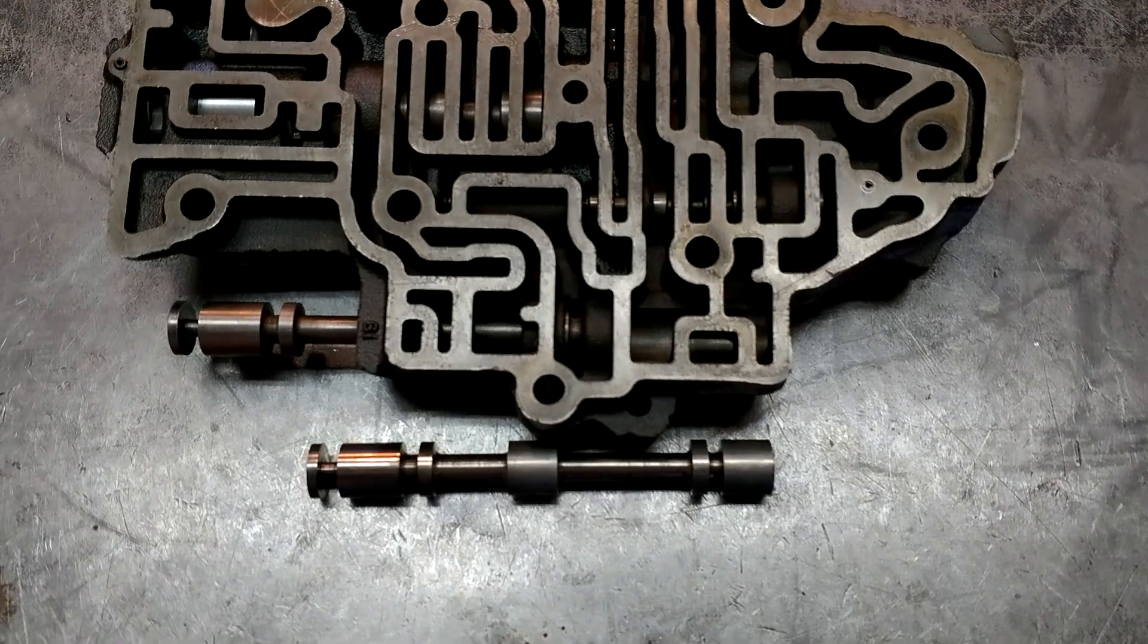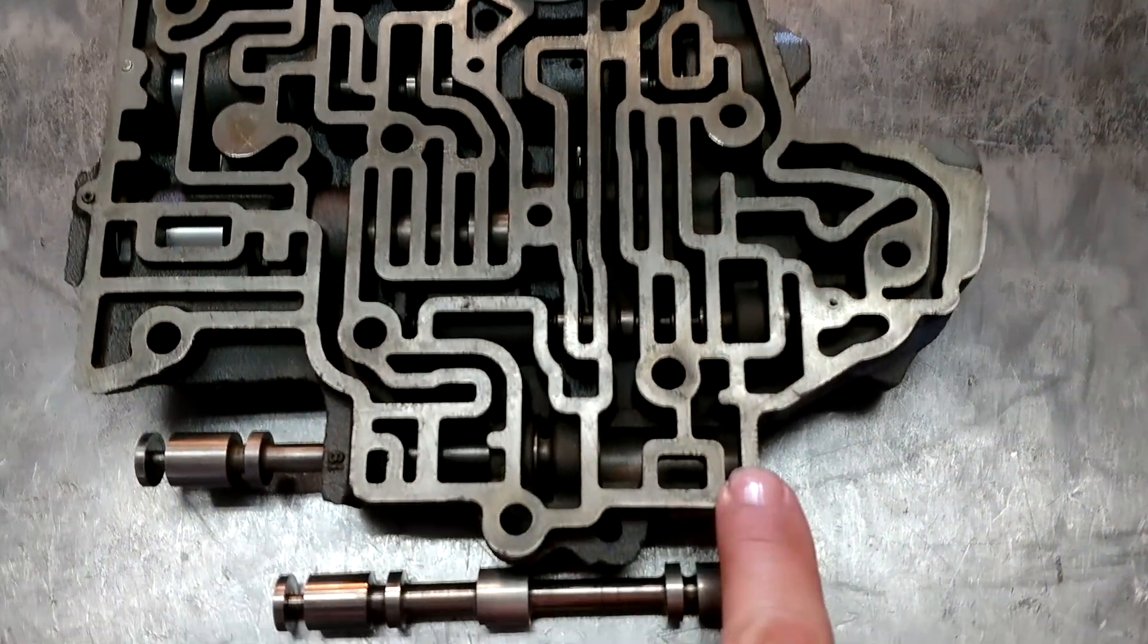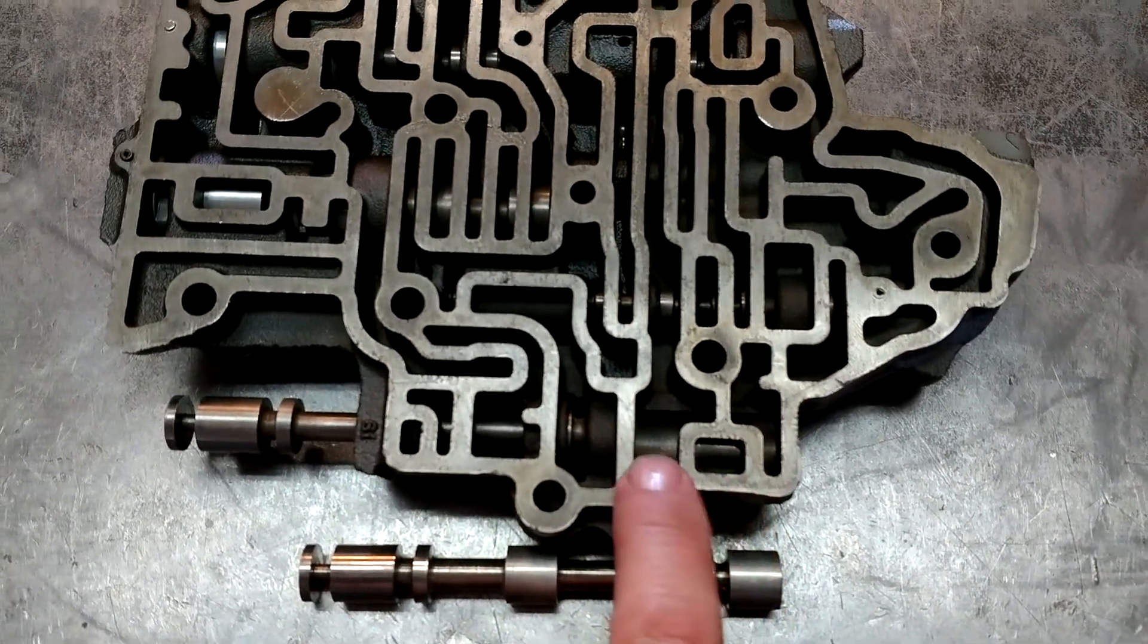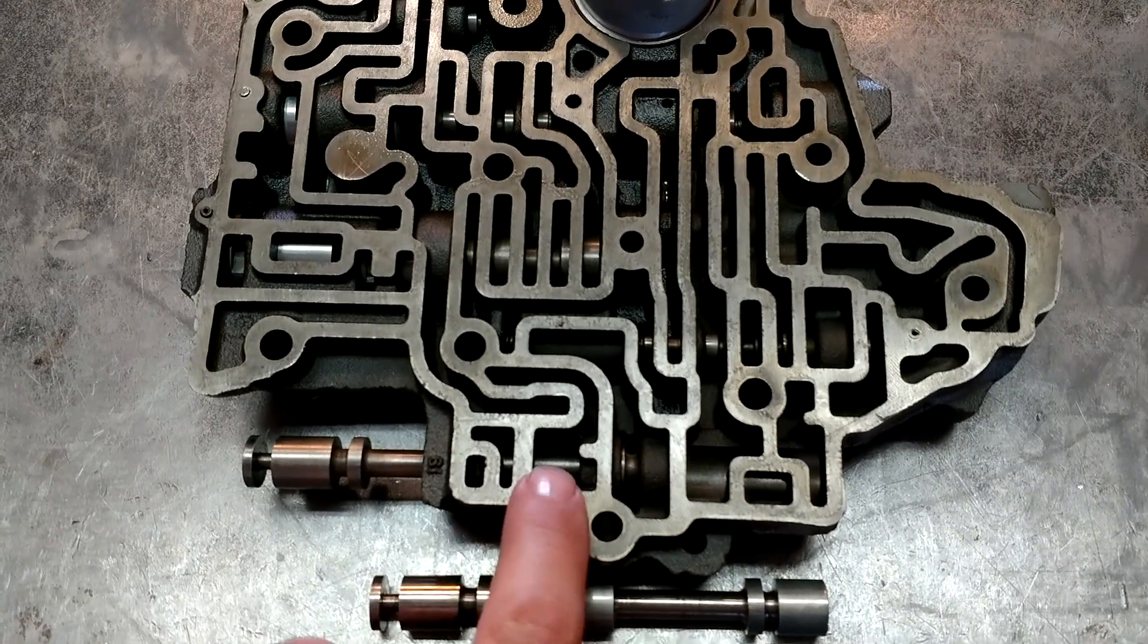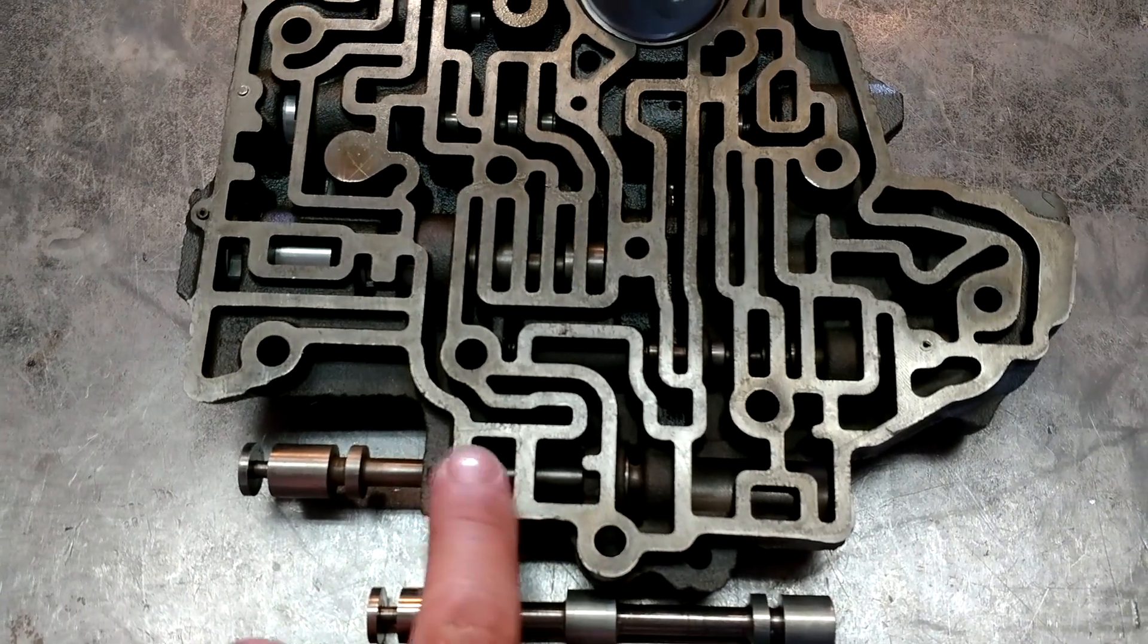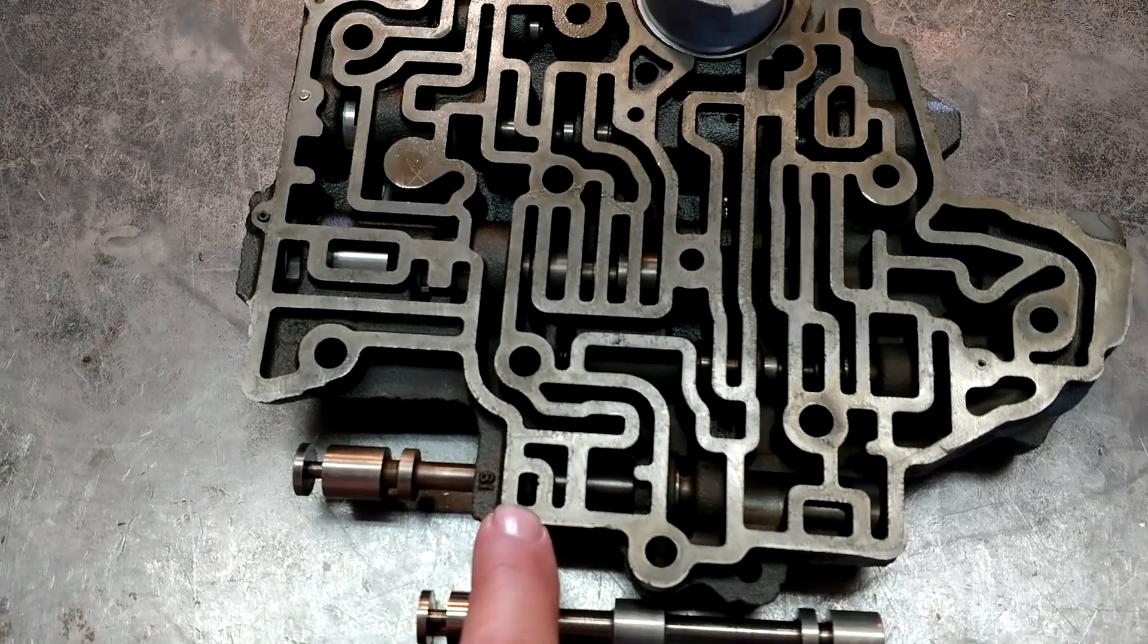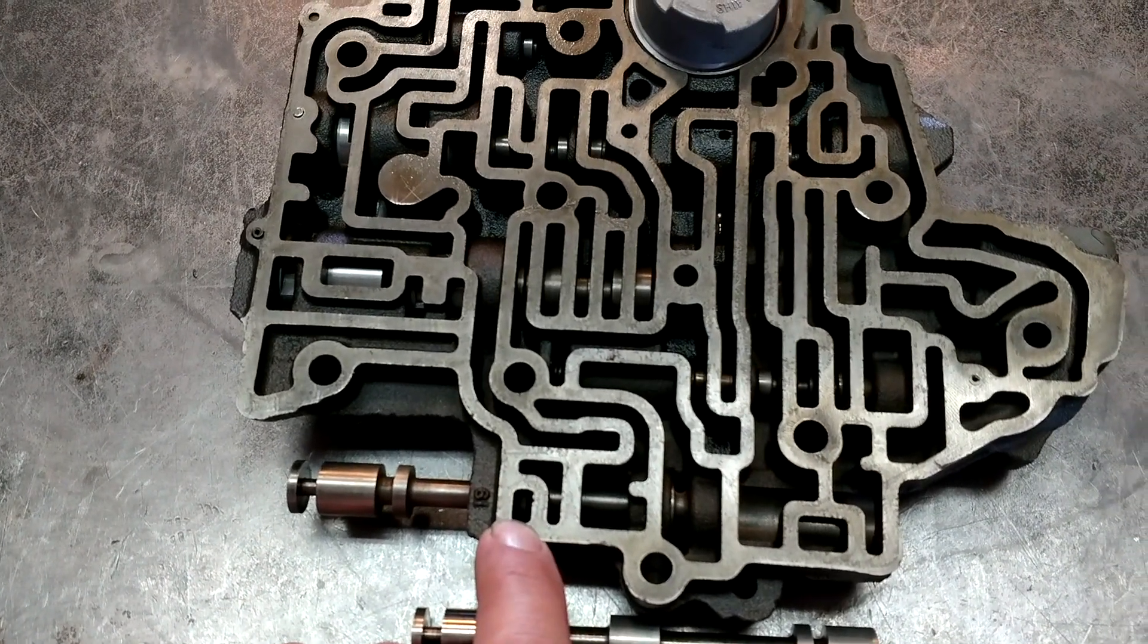The passages are fairly simple. They have basically - this is first, this is second, this is drive. This is line pressure. This is what we call reverse neutral drive oil. This is reverse, little L-shaped passage, and this is reverse exhaust on a stock valve body.